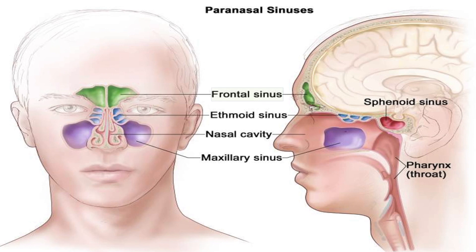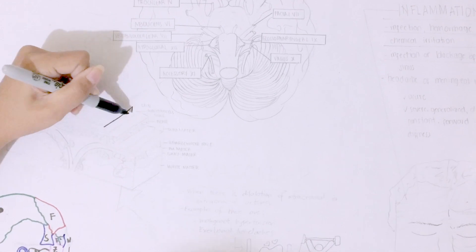Within some of the skull bones are hollow spaces lined with mucous membrane called the paranasal sinuses. These include the frontal air sinuses within the frontal bone, the maxillary sinus within each maxilla, the sphenoid air sinuses within the sphenoid bone, and the ethmoidal sinuses within the ethmoid bone.